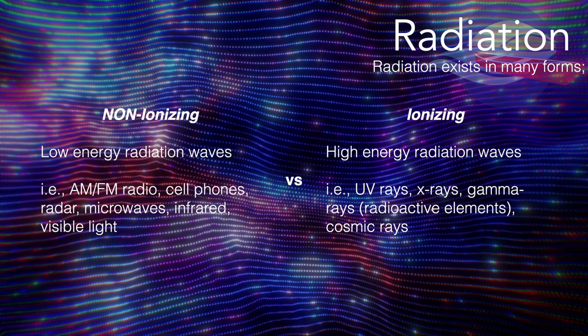But higher frequency wavelengths — such as ultraviolet, x-ray, gamma rays and cosmic rays — they all have a greater penetrating power. They're able to displace those electrons from their stable orbit and therefore have the capacity to cause some cellular damage and really pose a risk to humans due to their ionizing potential.